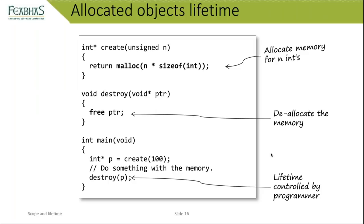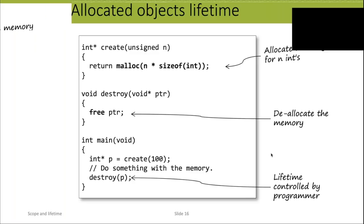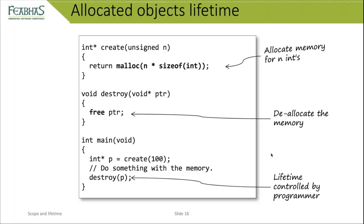Allocated objects, sometimes called dynamic objects, are where we use the allocation model in C — primarily malloc and free. Malloc requests allocation of memory; free releases it. What makes allocated memory different is it's the only memory model where the programmer controls the lifetime. For statics, the lifetime spans the whole program. For automatics, it spans the block.